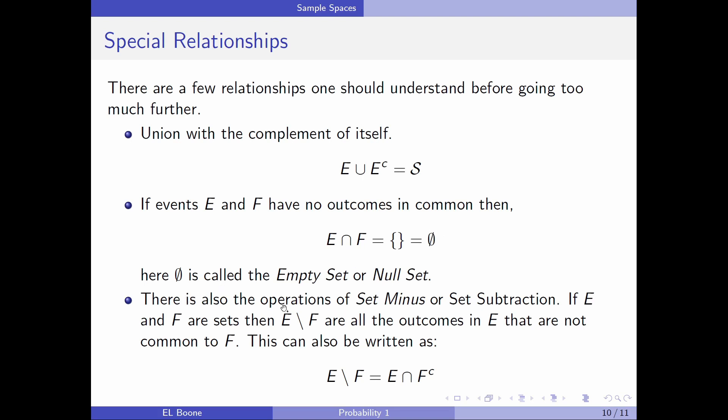So there's also set operations of set minus, also called set subtraction. So it says if E and F are sets, then E and this backslash F are all the outcomes that are in E that are not common to F. And you can also write it like this here. So it's the intersection of E intersect everything that's outside of F. So that gets us going to here. I'm going to keep the video short.